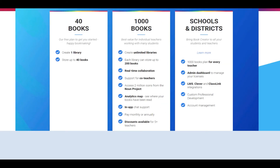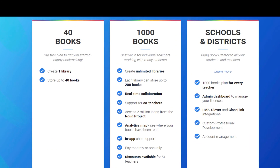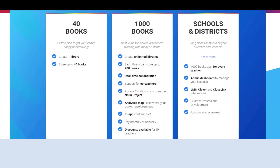We're going to use the free version of Book Creator, which you can see on your screen — 40 books, allowing you to create one library with up to 40 books. If you like Book Creator, there's an individual license with 1,000 books and libraries storing up to 200 books, or a school and district plan that gives you pretty much unlimited features.